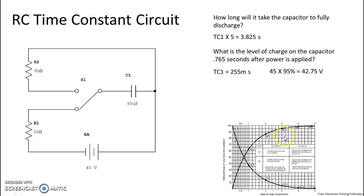If we are at time constant three, we look at our graph and we are at 95 percent. So we take our applied voltage of 45 volts and multiply it by 95 percent. We get a voltage of 42.75 volts — that is the level of charge on the capacitor at 0.765 seconds after power is applied.